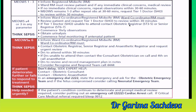If the MEOWS score is between 1 and 3, inform the registered midwife who will review the patient. If there are immediate concerns, a medical review should be done. If no concerns, reassess within 30 to 60 minutes. If the score remains the same after 30 to 60 minutes, request the Tier 1 doctor or SHO — the lowest level doctor — to visit and review the patient within 30 minutes.